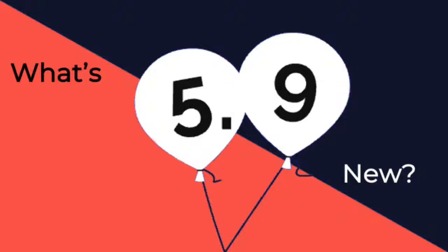I think it's safe to say that WordPress 5.9 is the most significant release in WordPress's history — and here I'm even including when Gutenberg, the block editor, was first introduced in version 5.0 in December 2018. Let's go over why this is such an important release and why a new era of web design is about to begin.